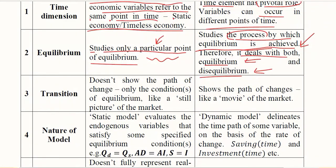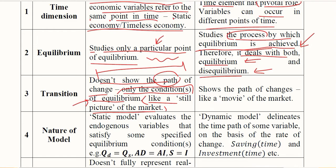The third ground is transition — the conversion from one phase into another. In static or comparative static analysis, it doesn't show the path of change, only the conditions of equilibrium, like a still picture of the market. A still picture has only one shape, one appearance — there is only one equilibrium or only the current condition, and the path of change over time is missing.